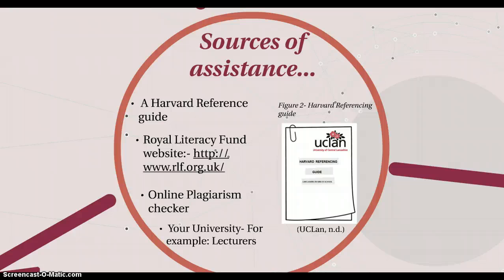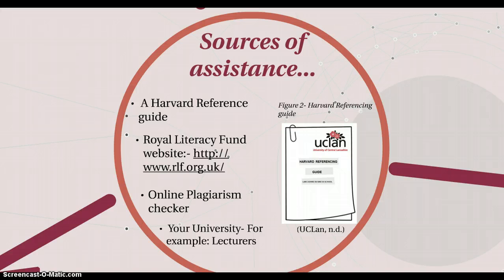The second thing I would recommend is the Royal Literary Fund website, as they give information on how to do academic writing and tell you more about academic integrity. The third is an online plagiarism checker, which allows you to check your work to see if you have plagiarised before you submit it to your lecturer. The final source of assistance I would recommend is your university — for example your lecturers — as they are able to teach you more about academic integrity and plagiarism in detail.